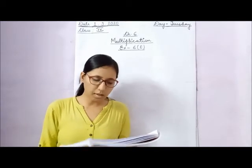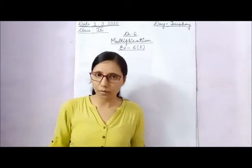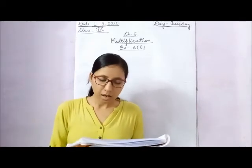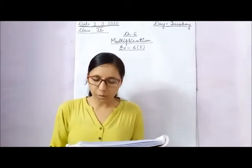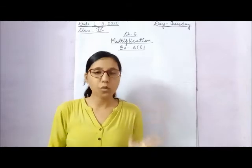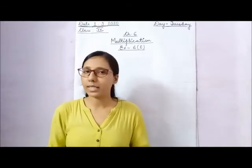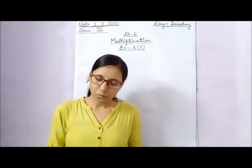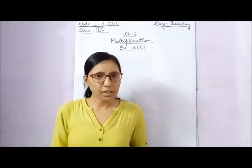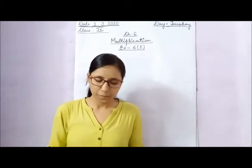Question 3: A box holds a dozen pans. A dozen means 12 units. How many pans are there in 72 such boxes? You have to multiply 12 by 72. You will do this question on your own.